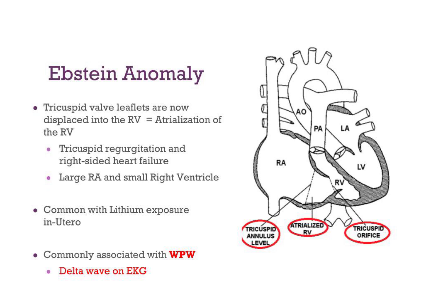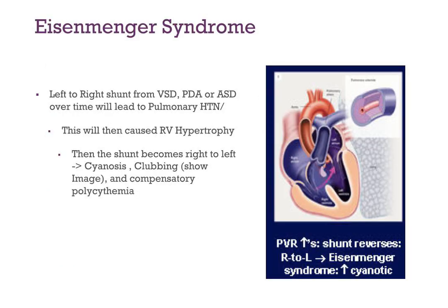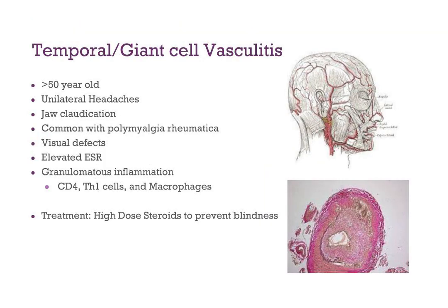Eisenmenger Syndrome involves a left-to-right shunt from a VSD, PDA, or ASD. Over time this causes right ventricular hypertrophy and pulmonary stenosis, increasing right heart pressure until it exceeds left heart pressure — then the shunt reverses to right-to-left. This leads to cyanosis, clubbing, and compensatory polycythemia. The kidneys sense low oxygen and secrete EPO, leading to reactive compensatory polycythemia with elevated hematocrit.